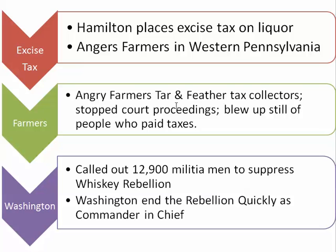These angry farmers went out and tar and feathered tax collectors — poured tar over them and threw feathers on them. It took a lot of skin off when it came off; it killed a lot of them. They went out and stopped court proceedings, just like Daniel Shays did. They blew up the stills of the people who paid the taxes. Then George Washington responded and called out 12,900 militiamen to suppress the Whiskey Rebellion — to put it down — and he was successful.